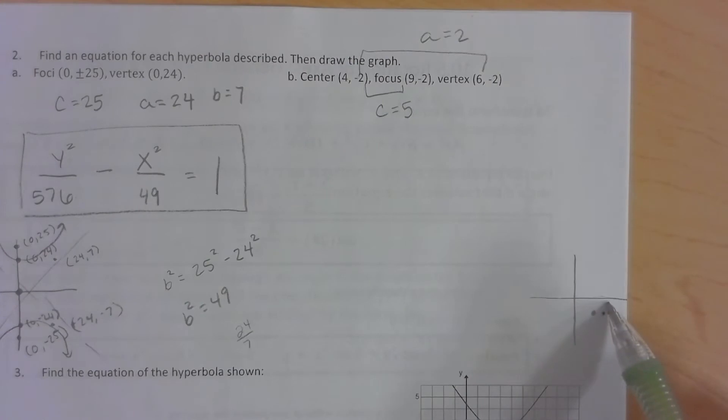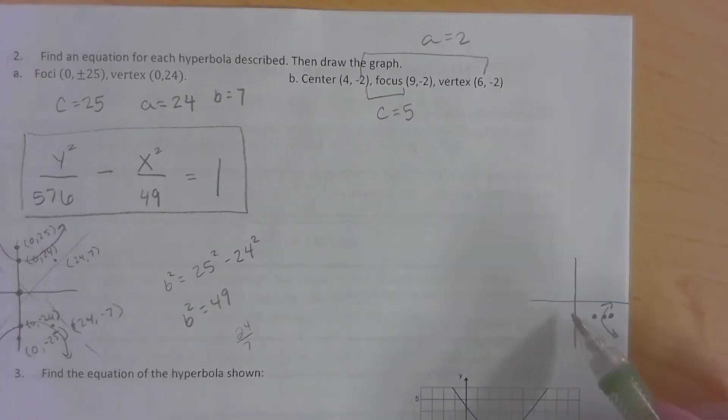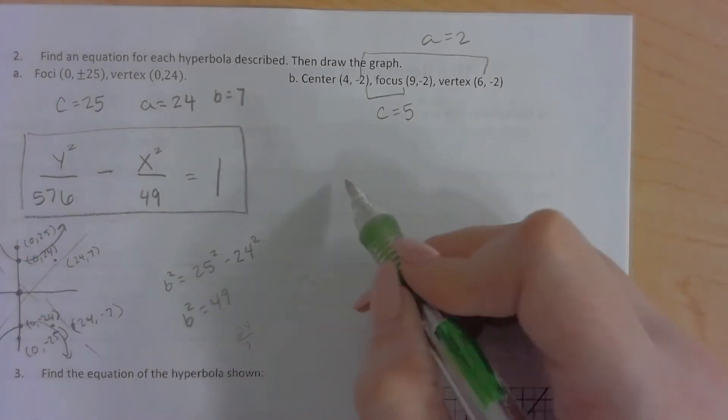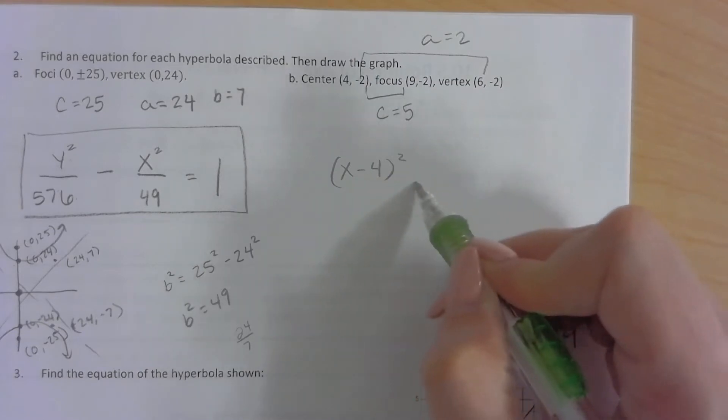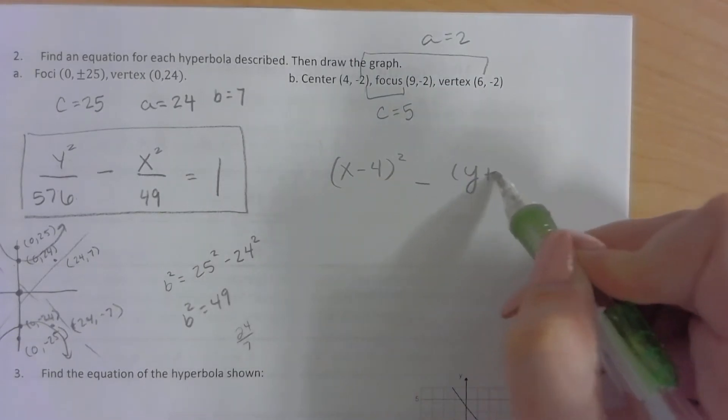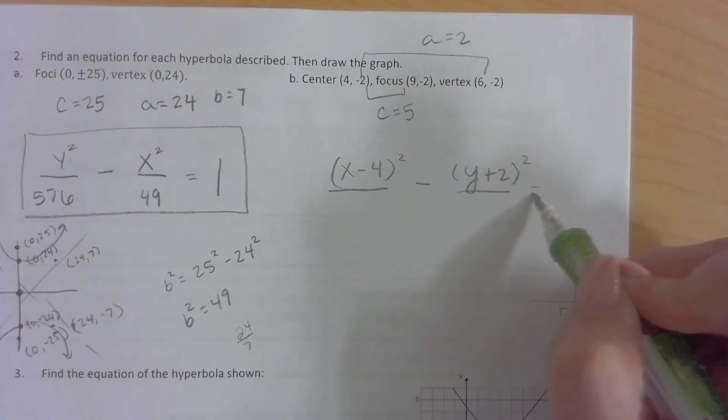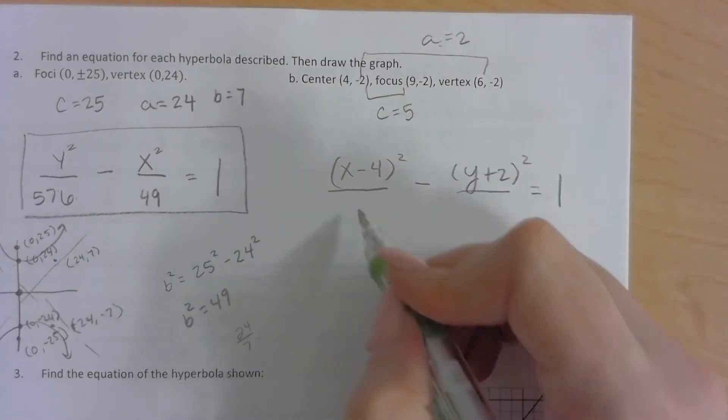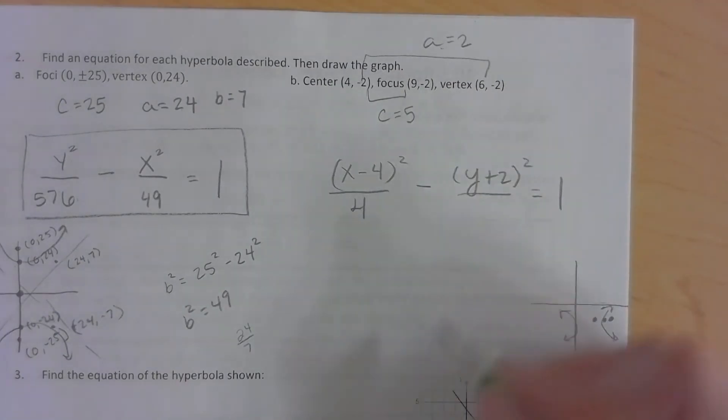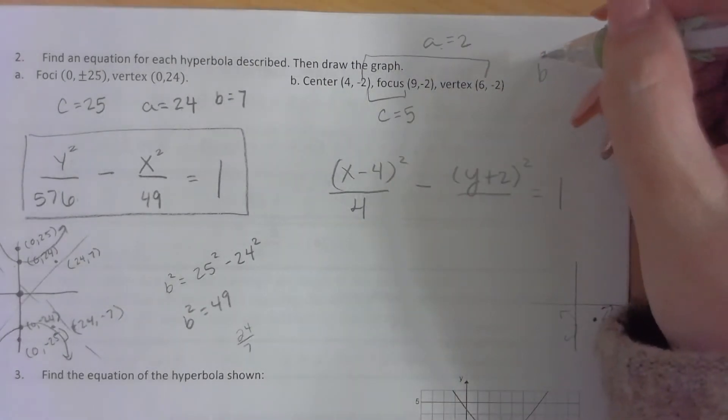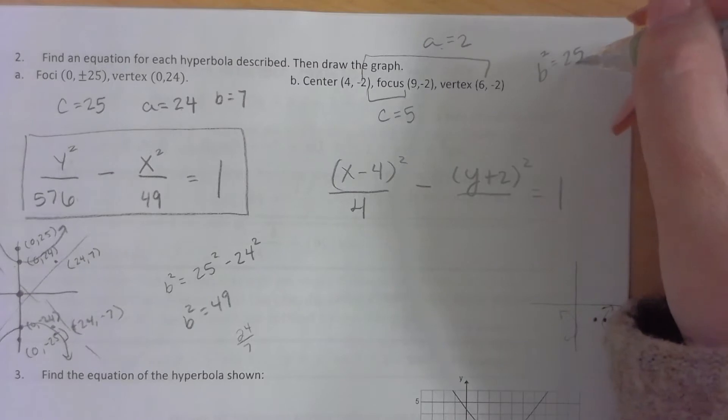Now this is going to be opening left and right here. So that's going to be an x squared first. So we're going to have x minus 4 squared minus y plus 2 squared. Now we know a is 2, so underneath x is going to be 4. And then we need to figure out b squared. So b squared equals 25 minus 4. So b squared is 21.